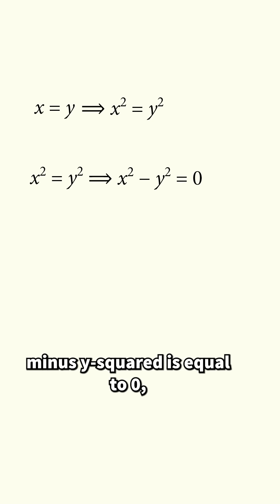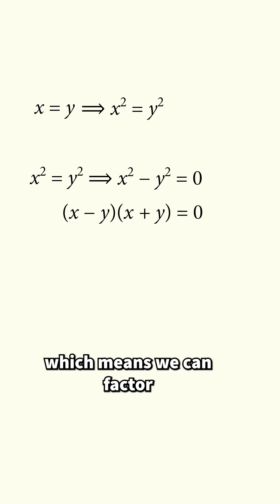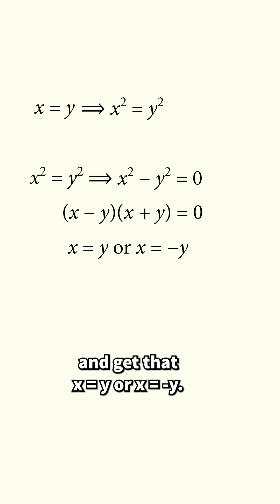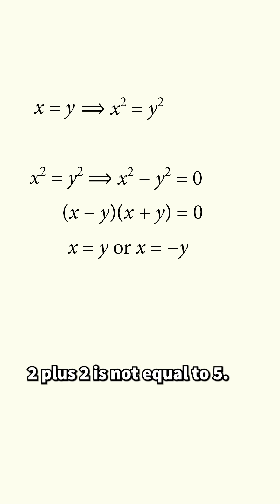The reason is that if x is equal to y, then x squared is equal to y squared, but if x squared is equal to y squared, we only know that x squared minus y squared is equal to 0, which means we can factor and get that x is equal to y, or x is equal to negative y. And that is why 2 plus 2 is not equal to 5.